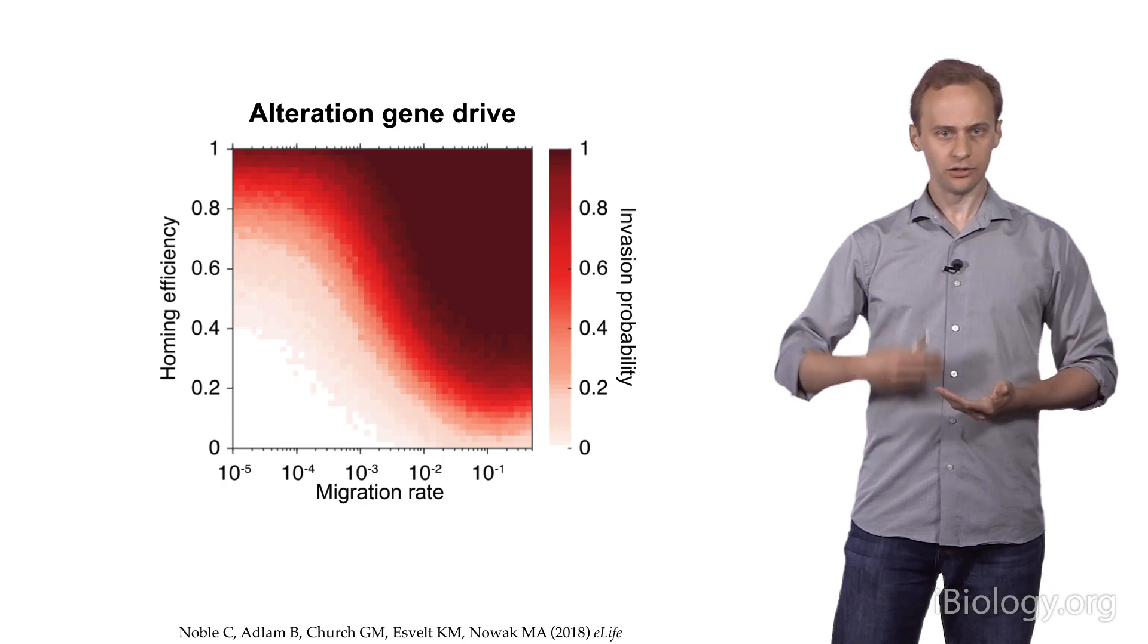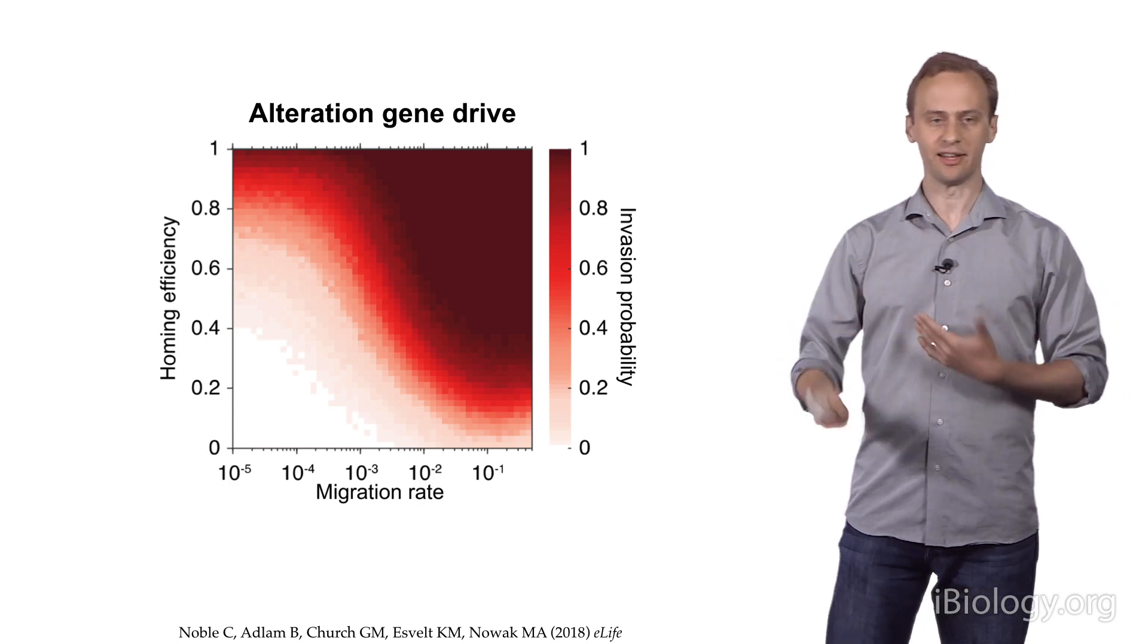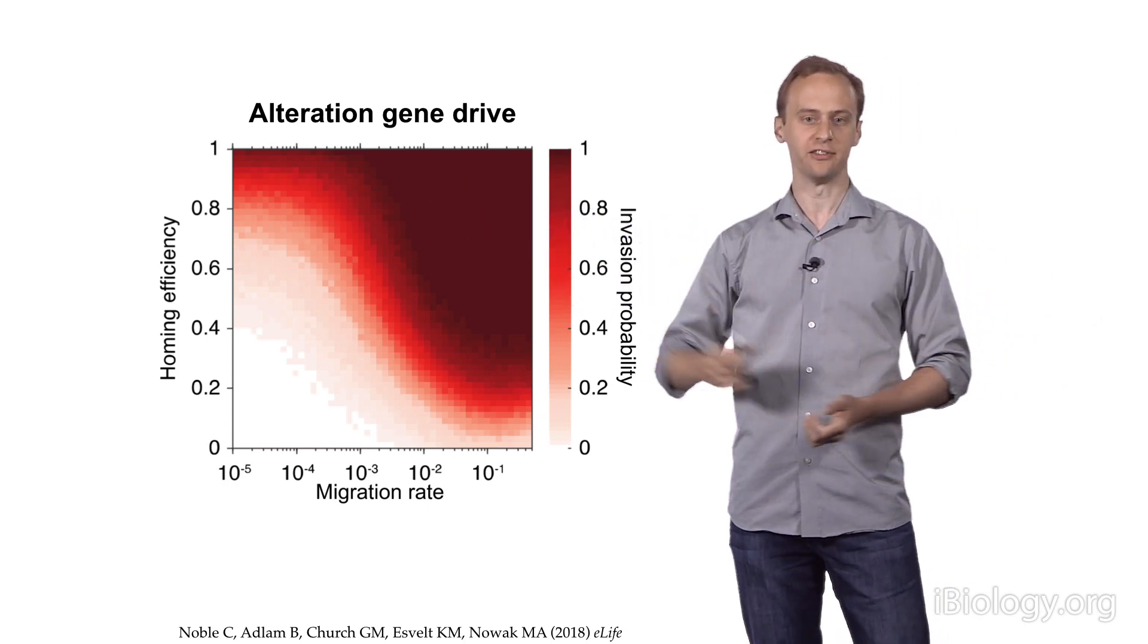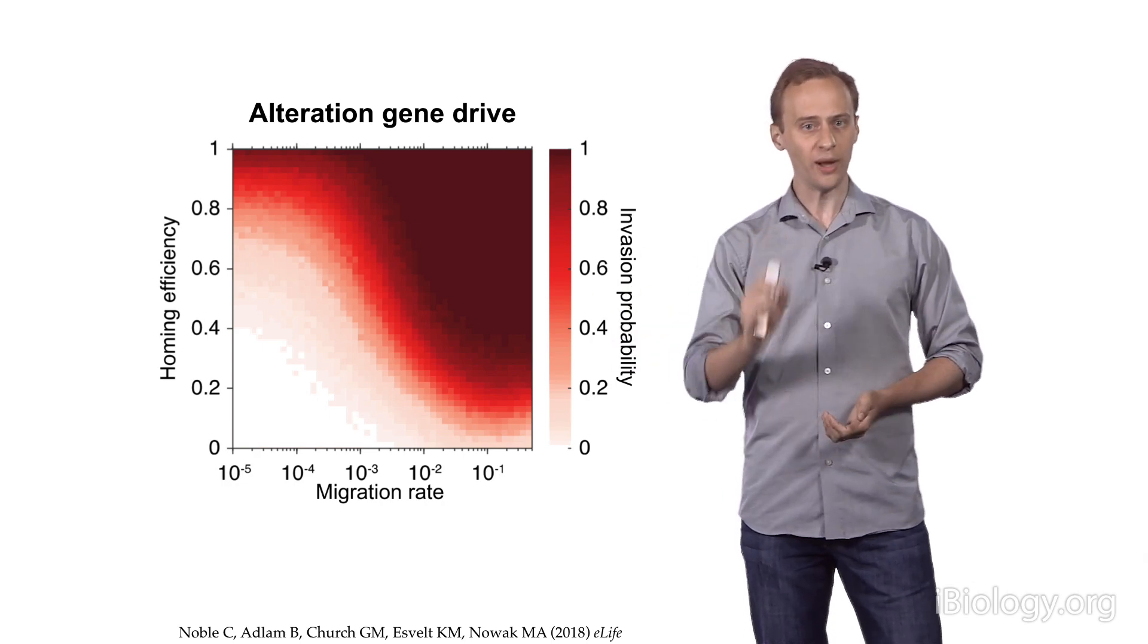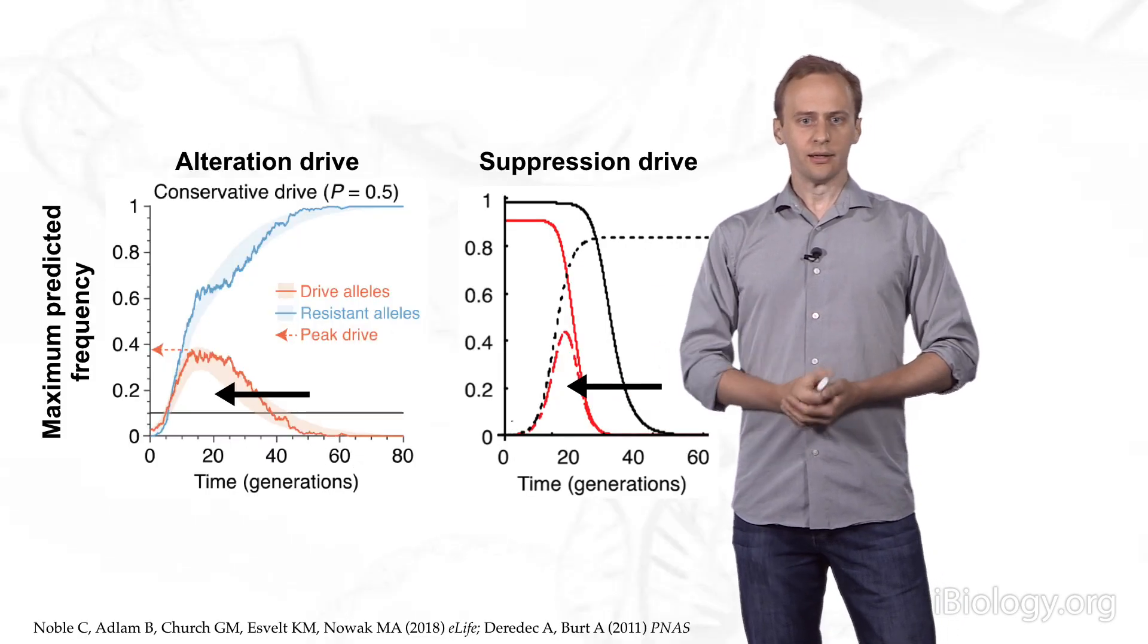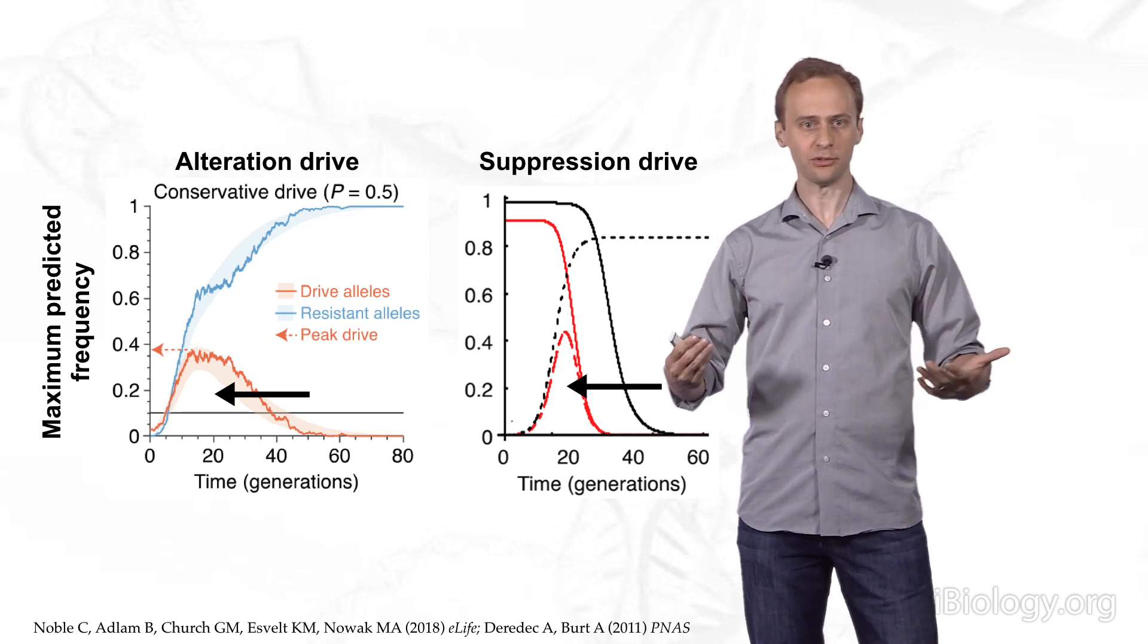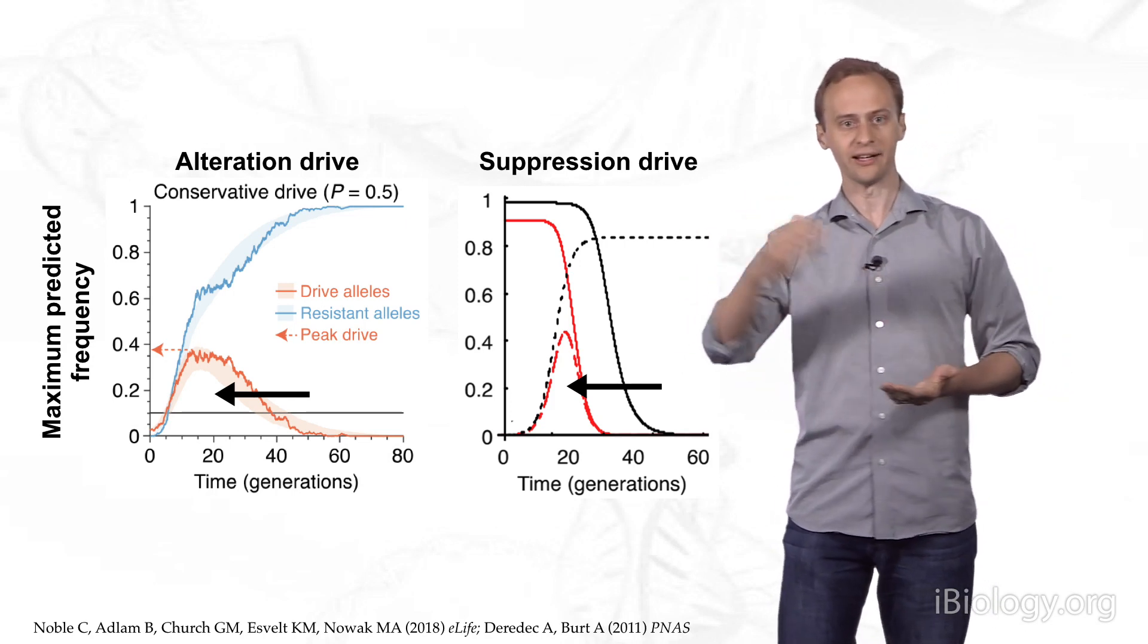The reason is that standard gene drive systems are capable of copying themselves indefinitely. A drive system that is copied very efficiently, that has a high homing efficiency, is predicted to spread between two populations and invade a second population if one in a million organisms moves between the two populations. We can't say for sure whether the same is true of suppression drives, because no models have been done specifically of population suppression drives. It's possible that in some species the drive system will self-extinguish in a local population before it can spread to a new one.